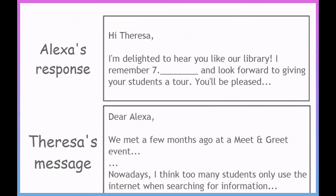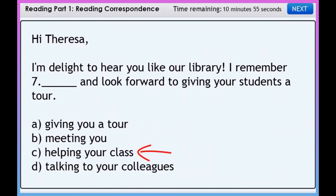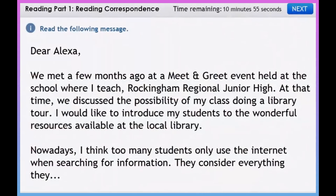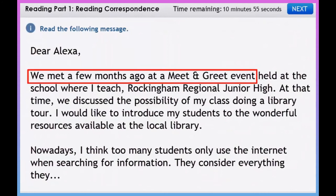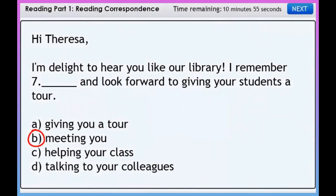Let's look at the first question for this section: 'I remember _______ [giving you a tour / meeting you / helping your class / talking to your colleagues] and look forward to giving your students a tour.' You probably remembered that as we skimmed Teresa's message, the first paragraph told us how she and Alexa had met at Teresa's school during a meetup event. Therefore, B — meeting you — correctly completes this sentence.